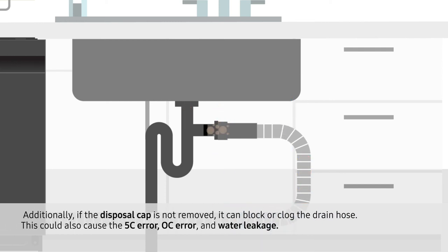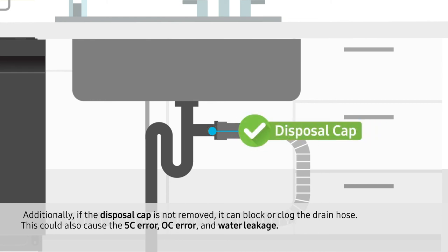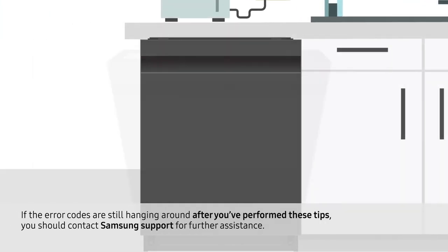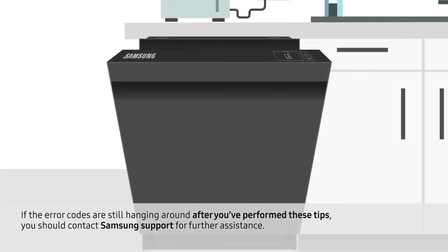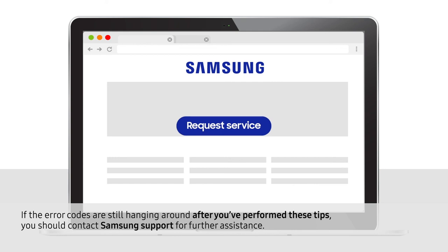Additionally, if the disposal cap is not removed, it can block or clog the drain hose. This could also cause the 5C error, OC error, and water leakage. If the error codes are still hanging around after you've performed these tips, you should contact Samsung Support for further assistance.